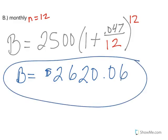So you can see it's $2.50-ish more than when we just did it once a year when we change it to 12 times a year.